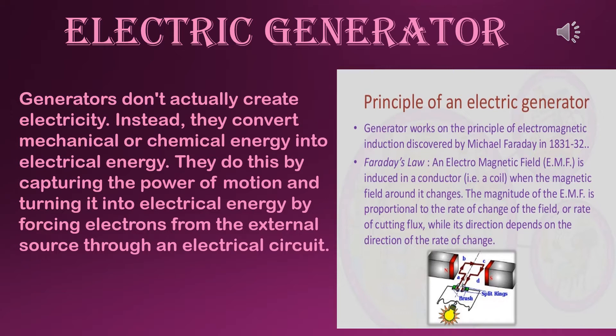The principle of an electric generator: it works on the principle of electromagnetic induction discovered by Michael Faraday in 1831-32. Based on Faraday's law, an electromagnetic field or EMF is induced in a conductor — that is a coil — when the magnetic field around it changes. The magnitude of the EMF is proportional to the rate of change of the field or rate of cutting flux, while its direction depends on the direction of the rate of change. These two are the basic principles of an electric generator.